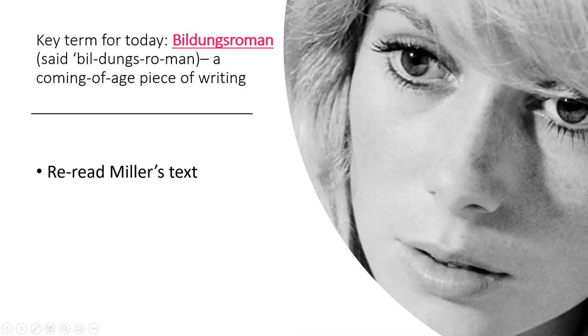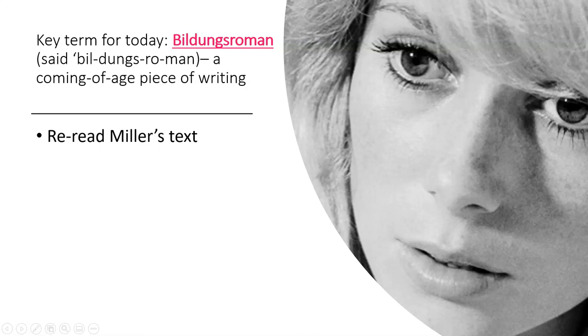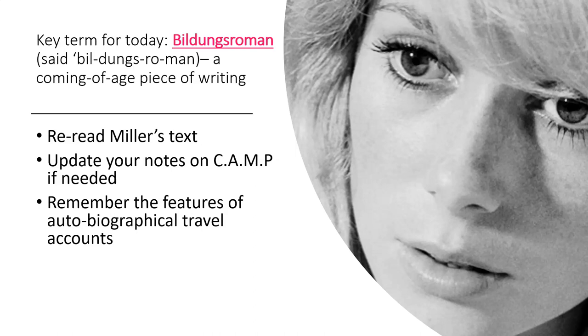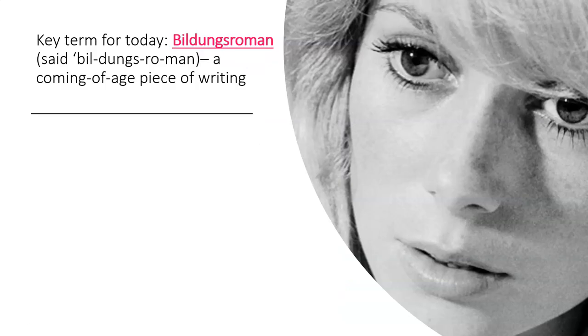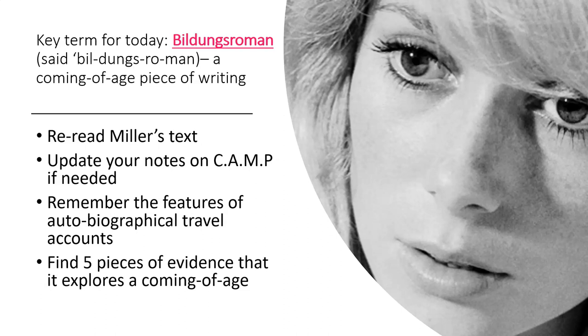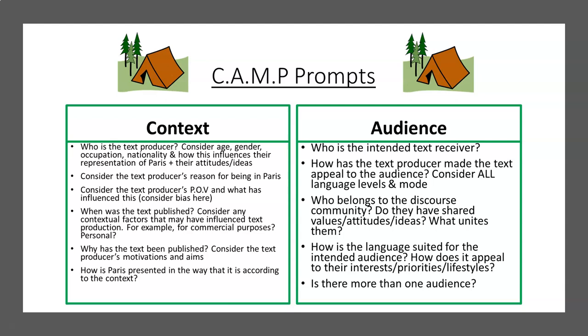Make sure you've re-read Miller's text and then update your notes on context if needed. Remember the features of autobiographical travel accounts, and go back and remind yourself of the contextual information at the start. Then I want you to find five pieces of evidence from the text that you think explore this idea of coming of age, using the camp prompts in your folder to create a really detailed set of notes.